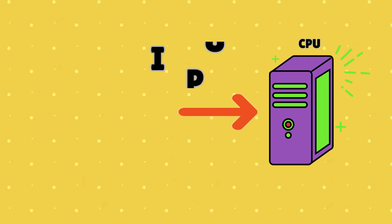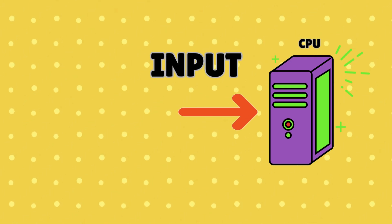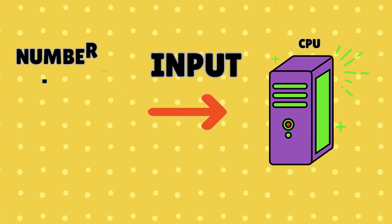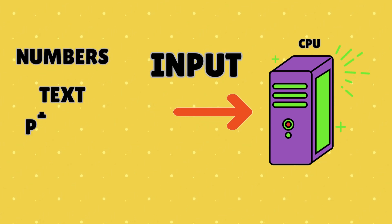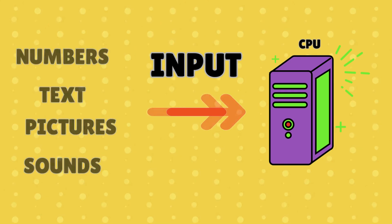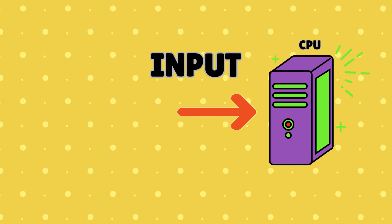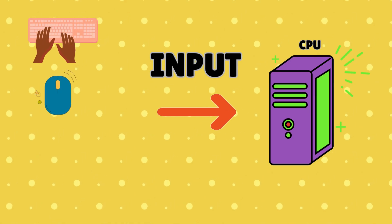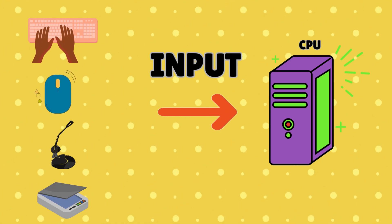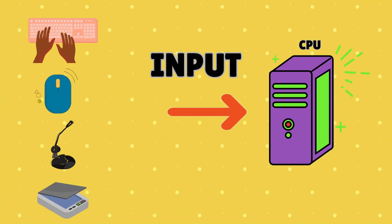Input is the information we give to the computer. Data can be numbers, text, pictures, or even sounds. We use devices such as keyboards, mouse, microphones, scanners, or webcams to provide input.